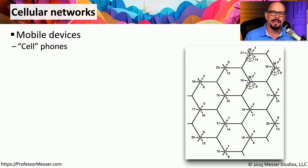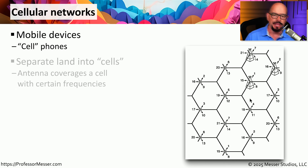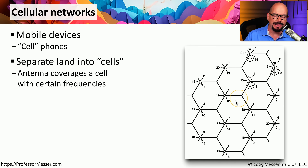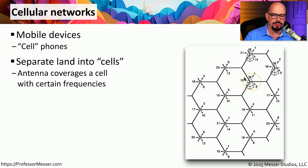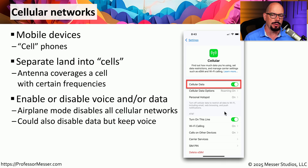If you have a mobile phone, you probably also refer to it as your cell phone. That term cell comes from the cellular networks that we use to communicate using these phones. These operate by having antennas that separate areas of the land into cells, allowing coverage inside those cells using a number of different frequencies, making up our cellular networks. These cellular networks provide both voice and data communication.